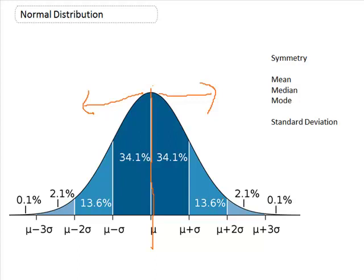Some other things to take into consideration for our normal distribution are our measures of central tendency — so our mean, median, and mode. For our normal distribution, these are all the same. Our mean, median, and mode are all equal and occur at the same point.